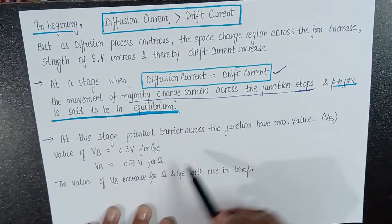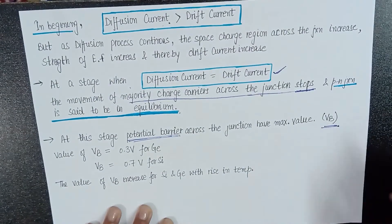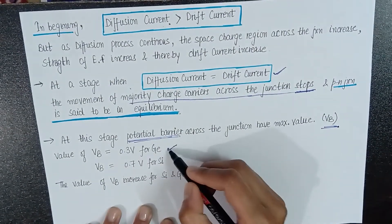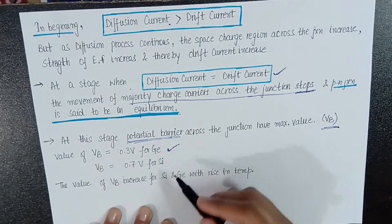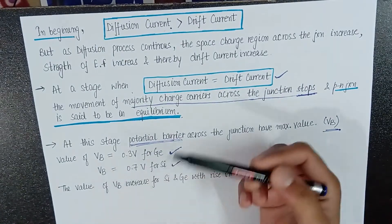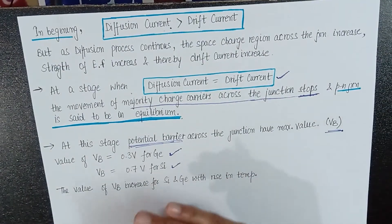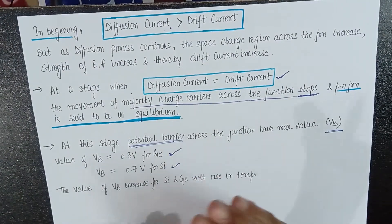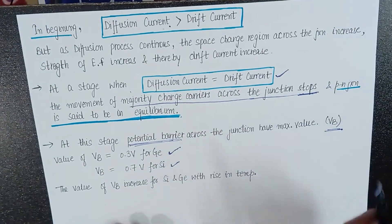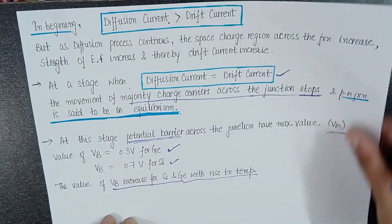At equilibrium, the potential barrier reaches its maximum value, called VB. This VB is 0.3V for germanium and 0.7V for silicon. If you cannot overcome this potential barrier, no current will flow across the junction. Additionally, the value of the potential barrier changes with temperature — as temperature increases, the barrier changes accordingly. This concludes the basics of the PN junction diode.